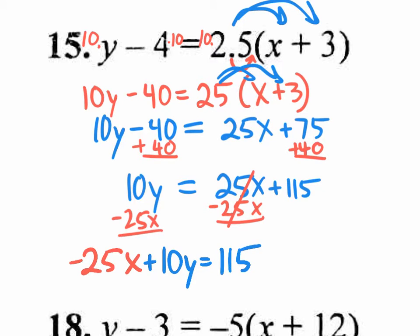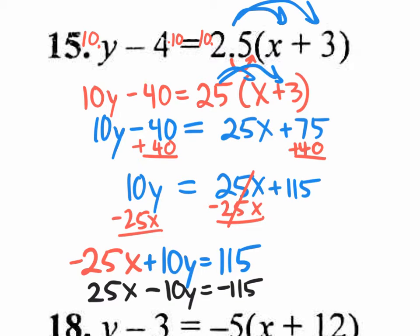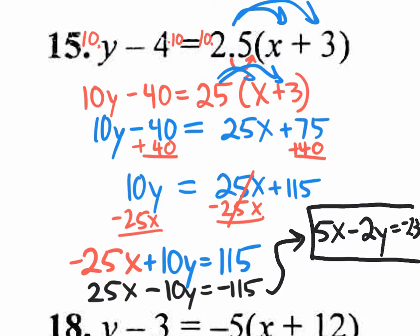If you do the math correctly and reach negative 25x plus 10y equals 115, but can't find it on the multiple choice, multiply everything by negative 1 to change all signs: positive 25x minus 10y equals negative 115. If it's still not there, divide everything by 5 — because 25, 10, and 115 are all divisible by 5. The final answer is 5x minus 2y equals negative 23.